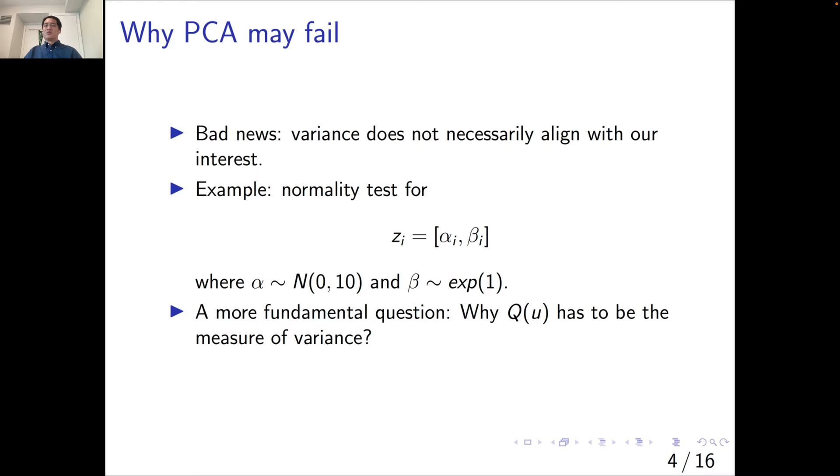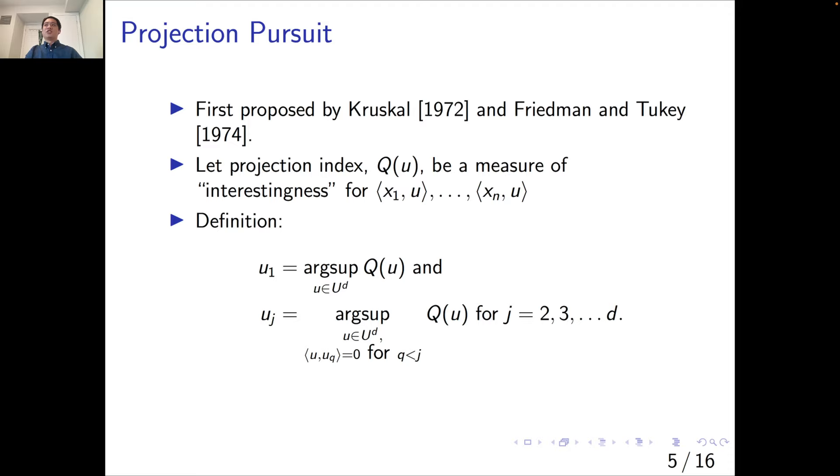A more fundamental question is, why does Q have to be a measure of variance? That is exactly the intuition behind projection pursuit. I'm not going to take all the credits because in early 70s, Kruskal, Friedman, and Tukey, some of the greatest statisticians, has already discussed this question.